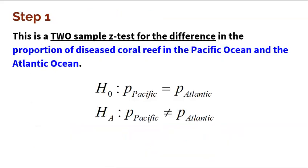Step one is really a formality — stating the name. This is a two-sample Z test for the difference in the proportion of diseased coral reef in the Pacific Ocean and the Atlantic Ocean. The null hypothesis is the status quo: no difference — the proportion of diseased coral reef in the Pacific Ocean is equal to the Atlantic Ocean. The alternative is what Jake believes: there is a difference, which is a not-equal-to alternative. So this is called a two-sided test.